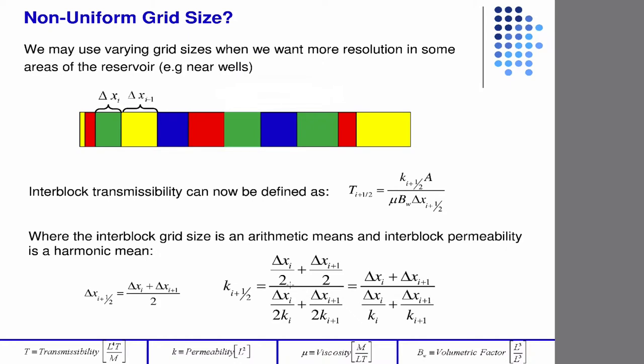So we worked through all the details there for the case of heterogeneity in the permeability and non-constant grid block size. And I guess I didn't mention, what would be a scenario where you'd want to have non-constant grid blocks?